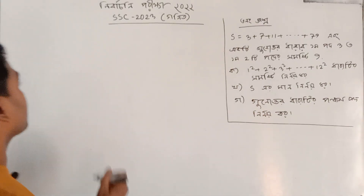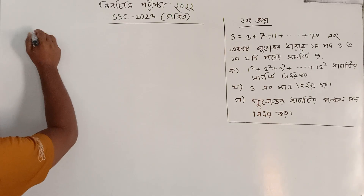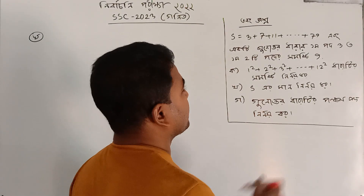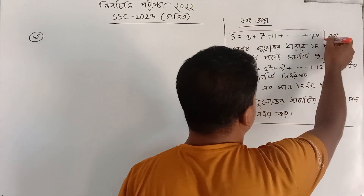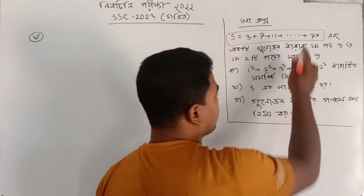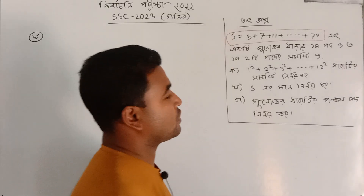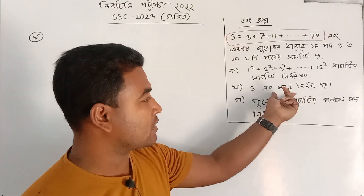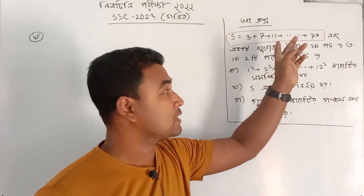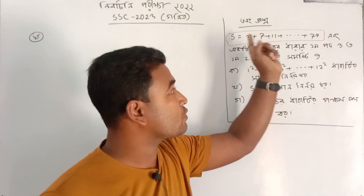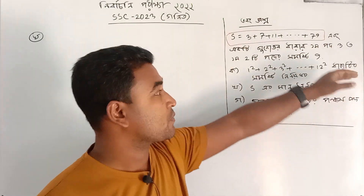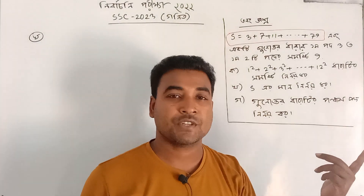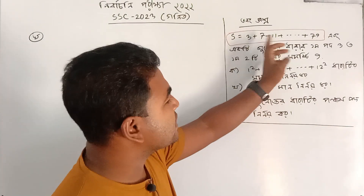How do you find S? S is equal to 3 plus 7 plus 11 plus dot dot dot plus 7 plus 79. That same S means S is naturally unique.